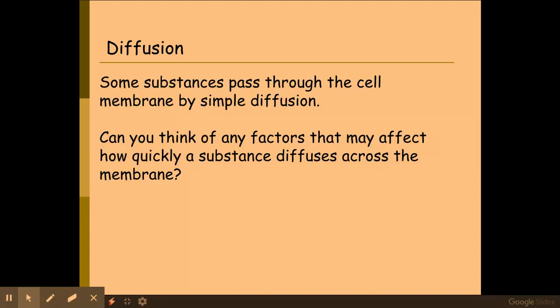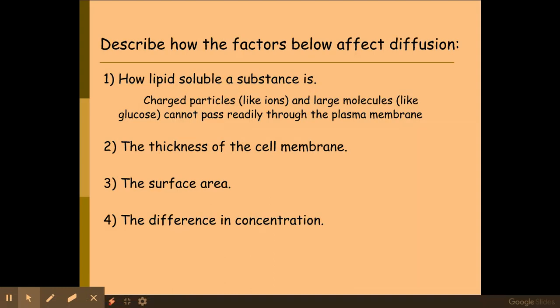We need to know about some of the factors that affect diffusion, which is how they do their experiments related to this. The first thing that changes and affects diffusion is how lipid soluble the molecule is. The more lipid soluble the substance is, the more likely it is to be able to pass through those phospholipids. Don't forget a phospholipid is lipid based as well, so if your substance is lipid soluble, it's more likely to diffuse straight through the phospholipid bilayer. The thickness of the membrane also matters — the thicker the membrane, the more time it will take for diffusion to occur.